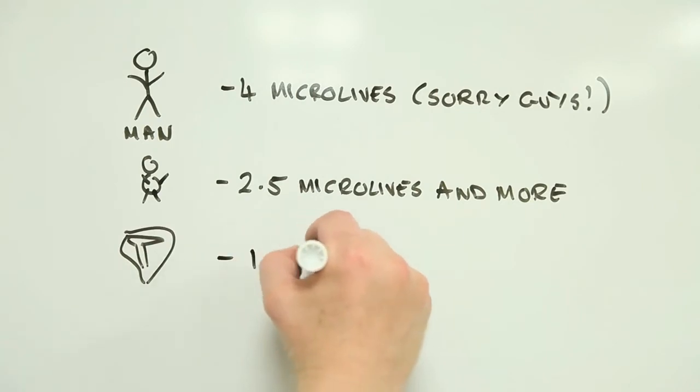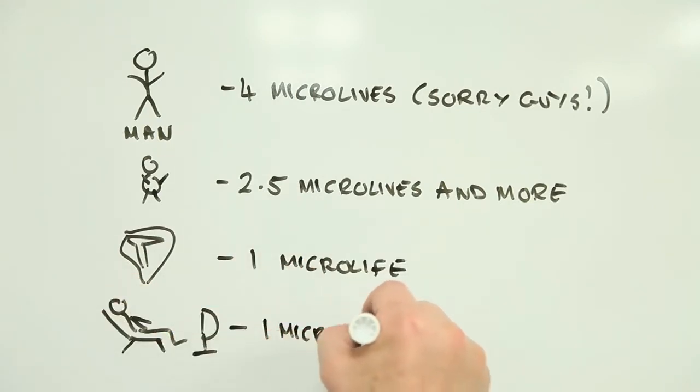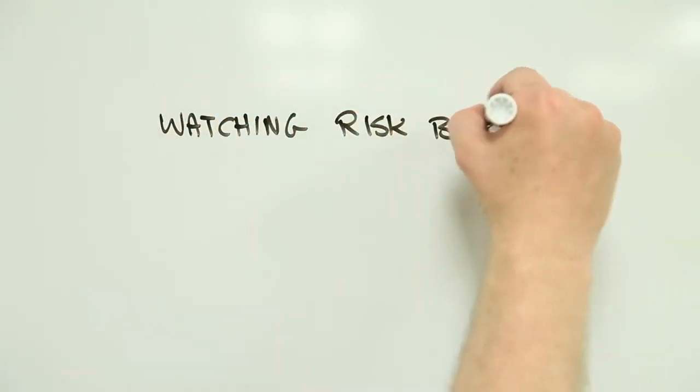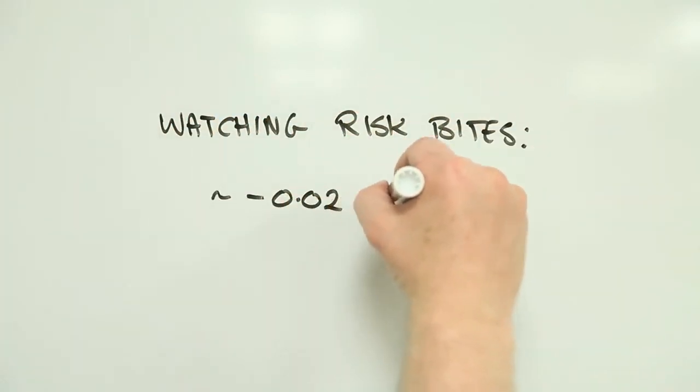Eating a portion of red meat will cost you 1 Microlife, as will watching 2 hours of TV. Even the time you spend sitting down watching this video could be costing you negative 0.02 Microlives, or half a minute of your natural lifespan.